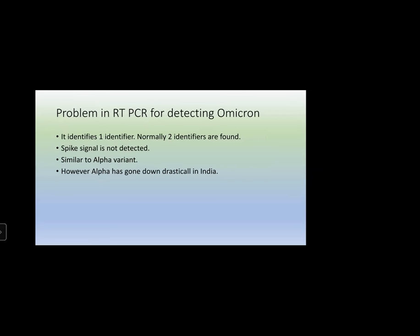What is the problem in RT-PCR for detecting Omicron? Normally two identifiers are found; now we use three identifiers: the RdRp or RNA polymerase region, the nucleocapsid region, and also the spike region. But the probes or primers we are using may not detect Omicron because it has many mutations in the spike protein, so the spike signal is not detected in conventional RT-PCR.